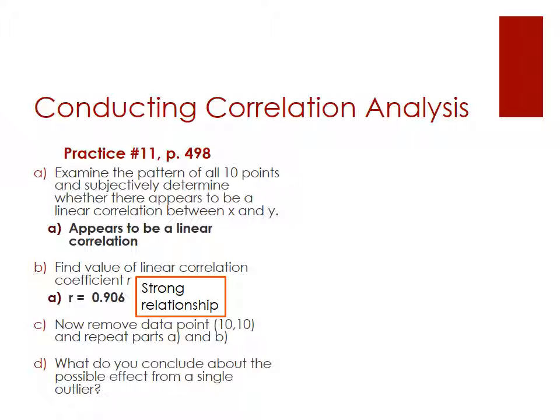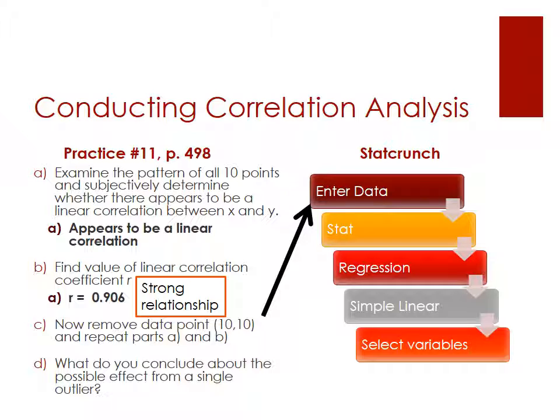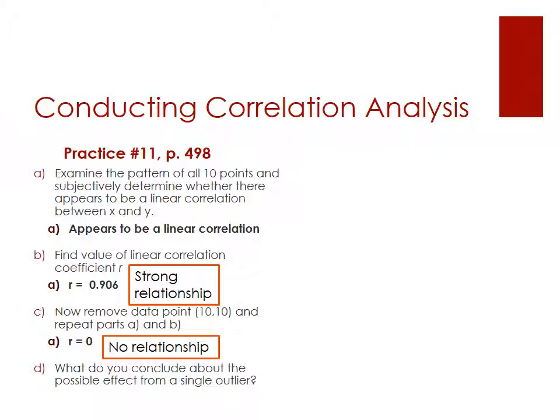Now we're going to remove a single data point. You're going to remove data point (10, 10) and you're going to repeat parts A and B. If you're looking at that with your data point (10, 10) removed, you'll be able to see that it actually looks like there's no relationship at all. There's just a cluster of numbers together. And then we run that analysis. We find that we get a relationship of zero. So there's absolutely no relationship between the X and the Y.